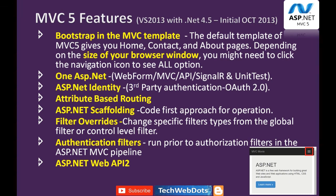Another important feature is One ASP.NET — in a single ASP.NET MVC 5 application we can use Web Forms, MVC, Web API, and even SignalR with unit testing. That is called a One ASP.NET application. ASP.NET Identity allows third-party authentication using OAuth 2.0, so you can integrate Facebook, Twitter, and other providers. Attribute-based routing is also available, allowing attributes on controller action methods.